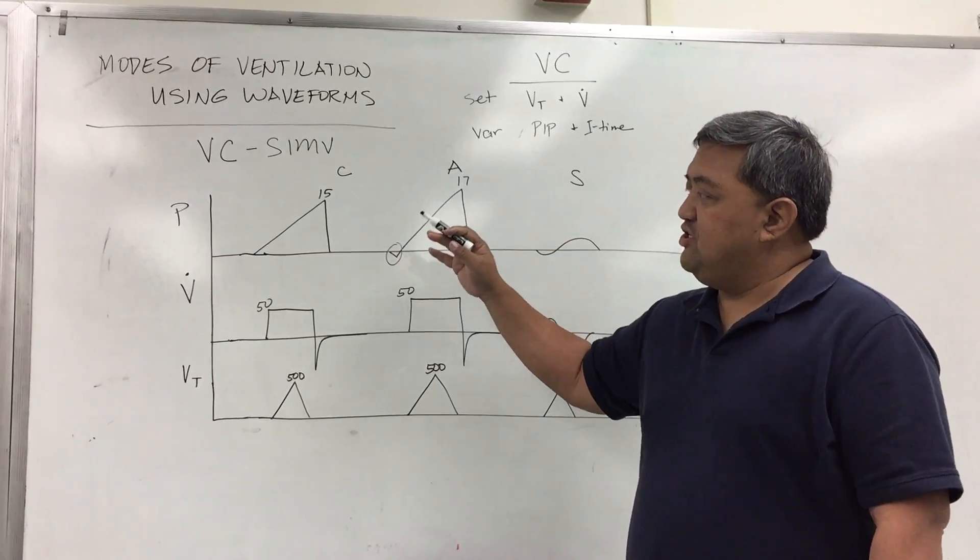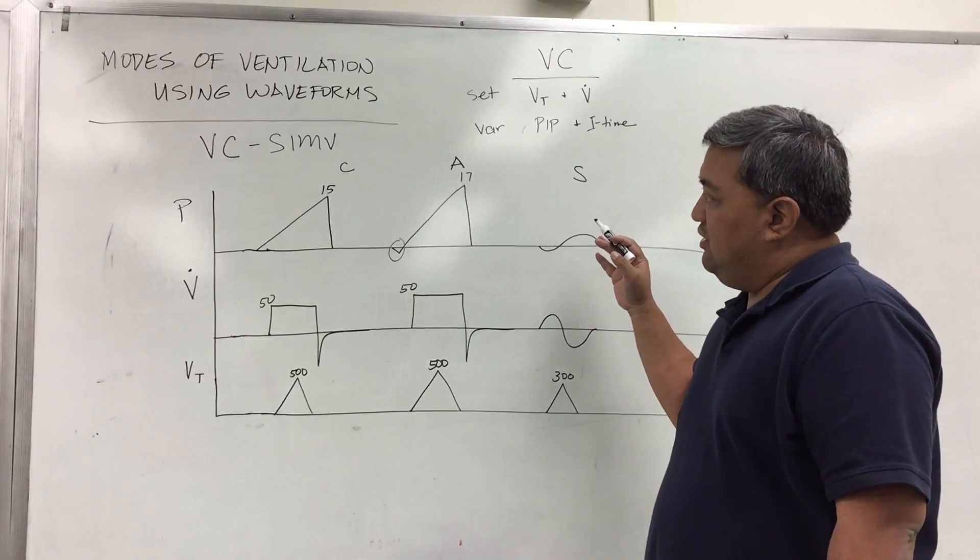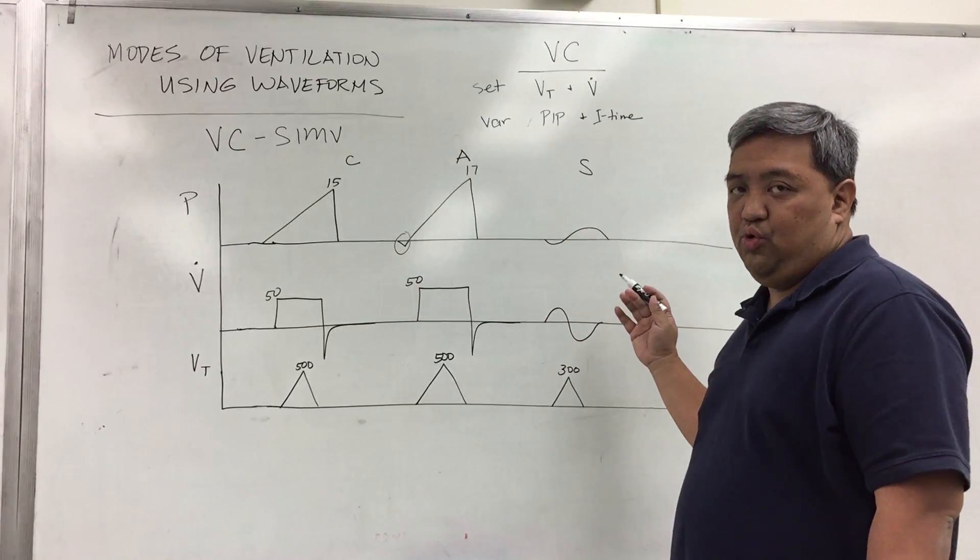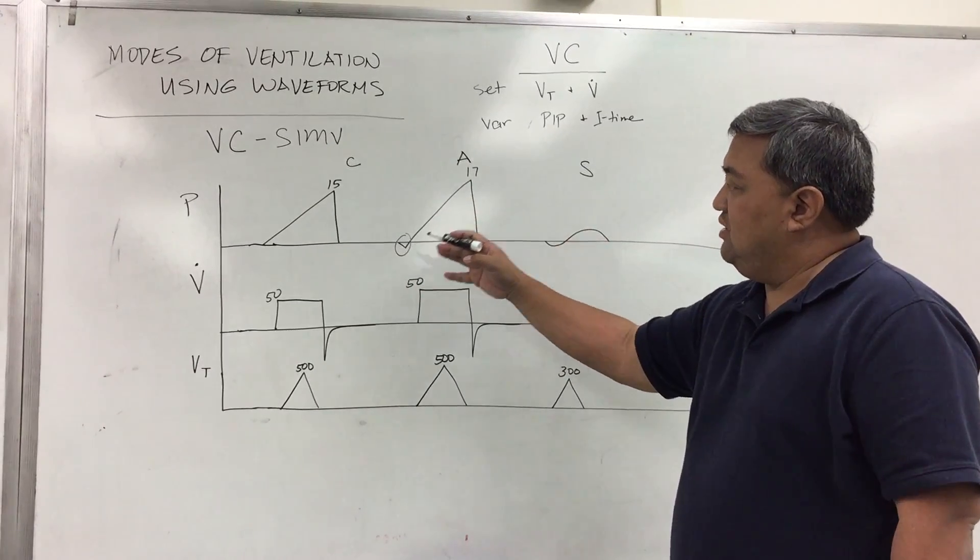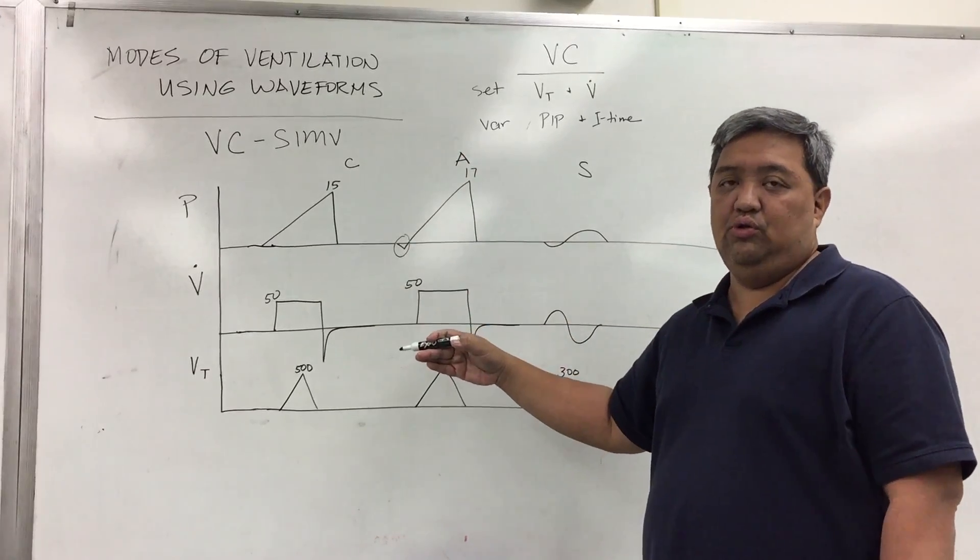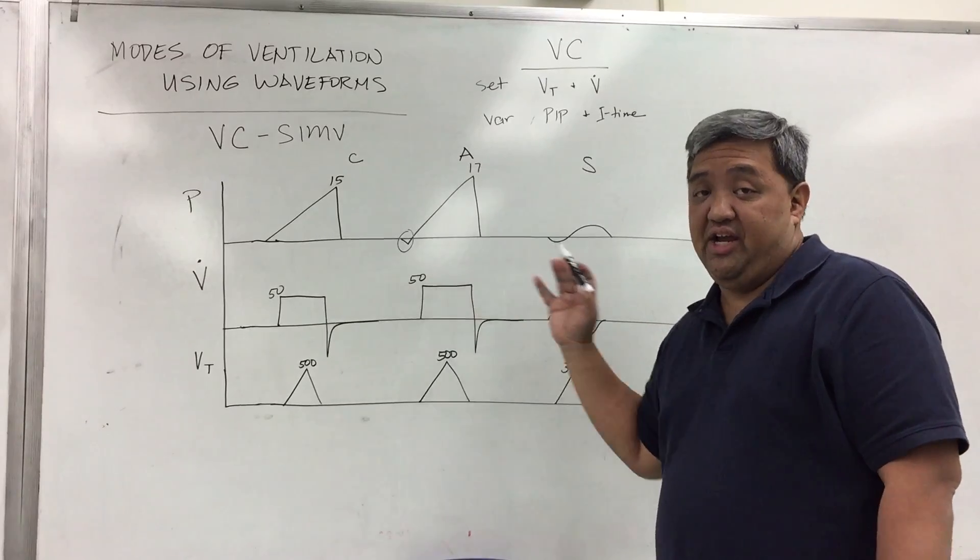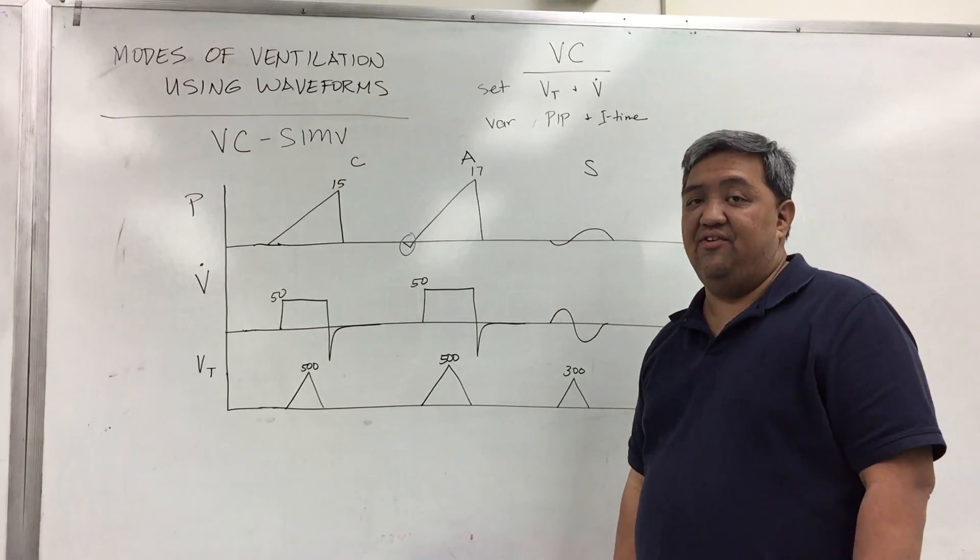The combination of both mechanical and spontaneous breathing is what constitutes SIMV. However, it does not have to be in this particular order except that you will have a controlled breath, an assisted breath, and a spontaneous breath and this could be interchanged. So that's your VC-SIMV.